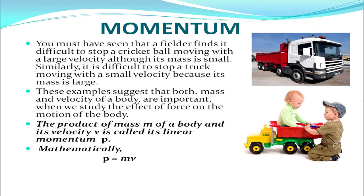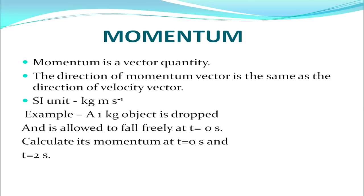The product of mass m of a body and its velocity v is called its linear momentum p. Mathematically, p = mv, that is momentum equals mass times velocity. Momentum is a vector quantity. The direction of the momentum vector is the same as the direction of the velocity vector. Its SI unit is kg meter per second.